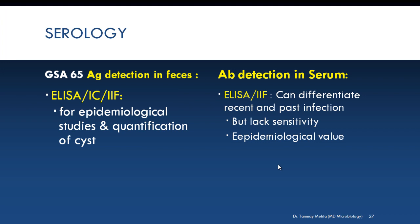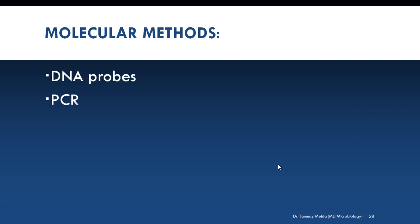Serodiagnosis is also helpful. For antigen detection in feces, the GSA-65 antigen is detected in stool with the help of ELISA, immunochromatography, or indirect immunofluorescence. Antibody detection is also possible and can differentiate recent from past infection, but it is not very sensitive and has only epidemiological value. For molecular methods, DNA probes and polymerase chain reaction (PCR) have been used to demonstrate the parasitic genome in stool specimens, but they are expensive.